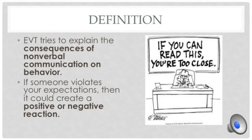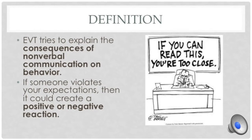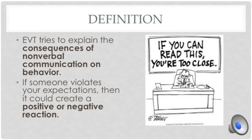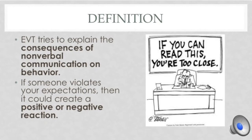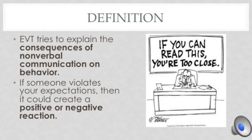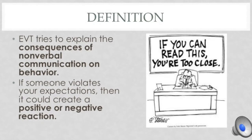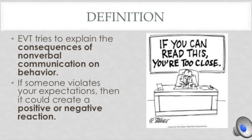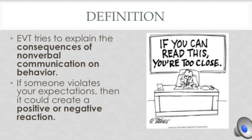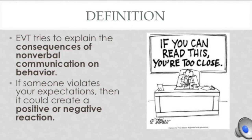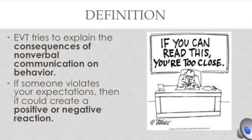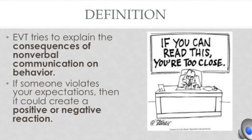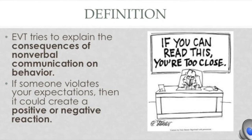The expectancy violations theory tries to explain the consequences of nonverbal communication on behavior. The theory, which I'll refer to as EVT, defines personal space as an invisible element in interpersonal communication, which basically means we all have an expectation of nonverbal behavior with other people. But if someone violates your expectations, it can make you uncomfortable or create a positive or negative reaction — then it's called an expectancy violation.